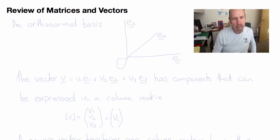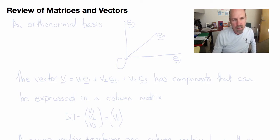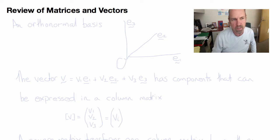We need to review matrices and vectors, because in continuum mechanics we're going to learn about tensors. A tensor is to a square matrix what a vector is to a column matrix.